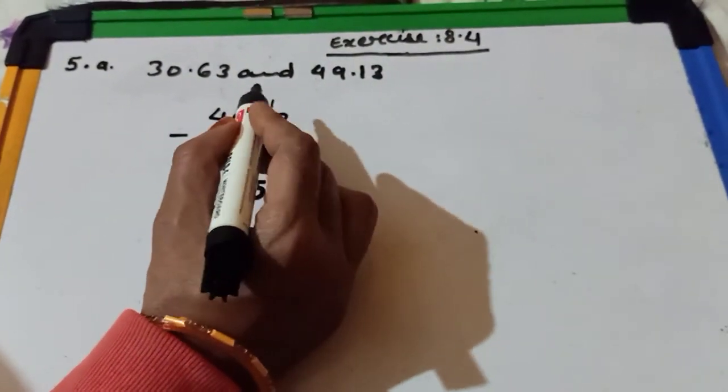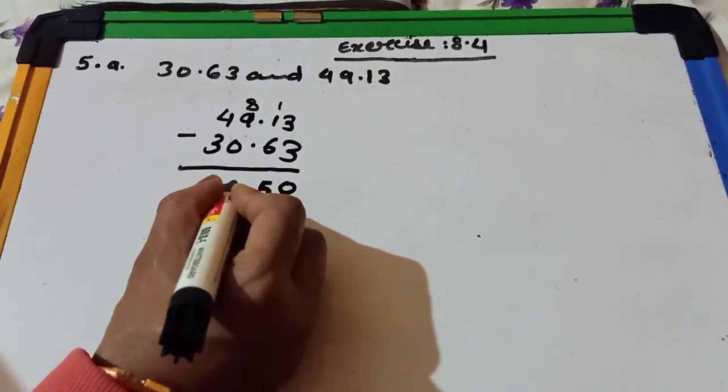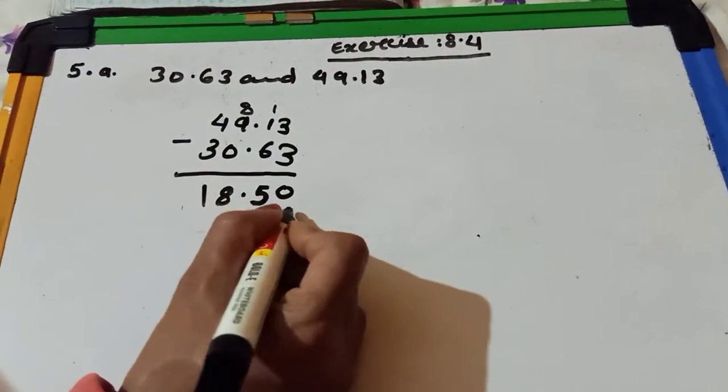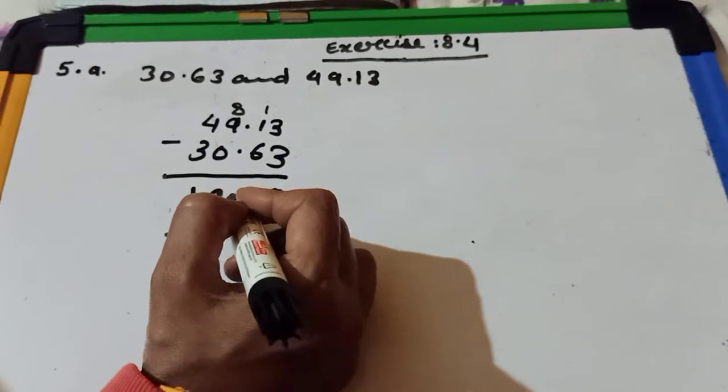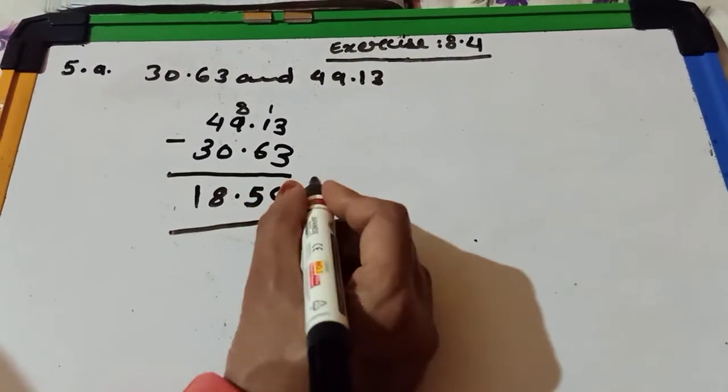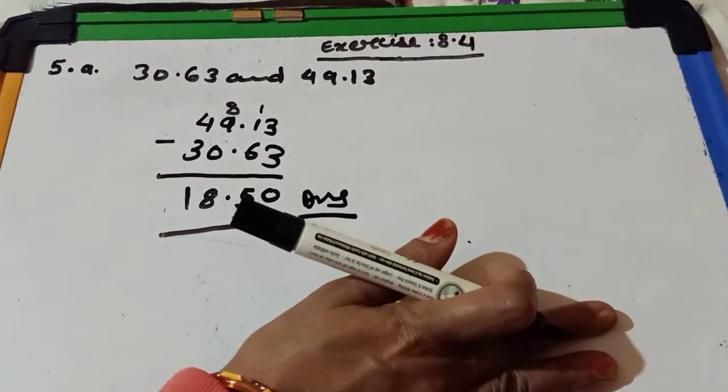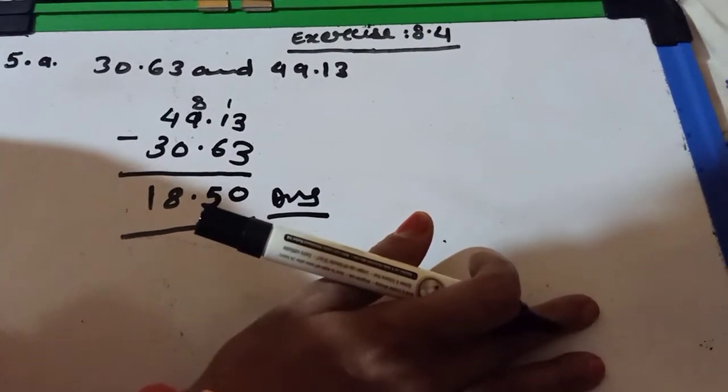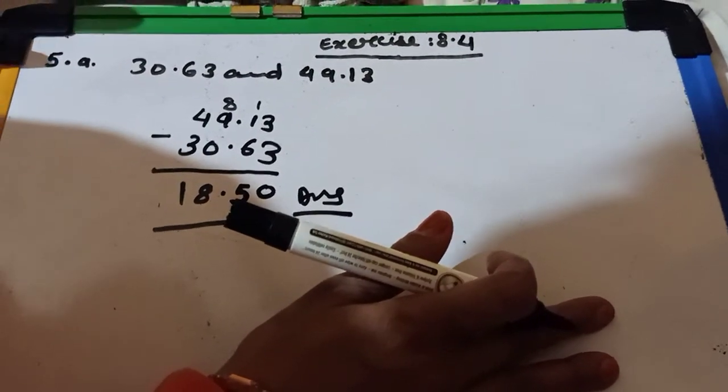It is 11 minus 6 is equal to 5. And when we take 1 carry here, 8 minus 0 is equal to 8, and 4 minus 3 is equal to 1. And after that we put the point. So the answer of this question is 18.50. I think it is clear and you can do question number 5 each and every question very easily because it is very easy.